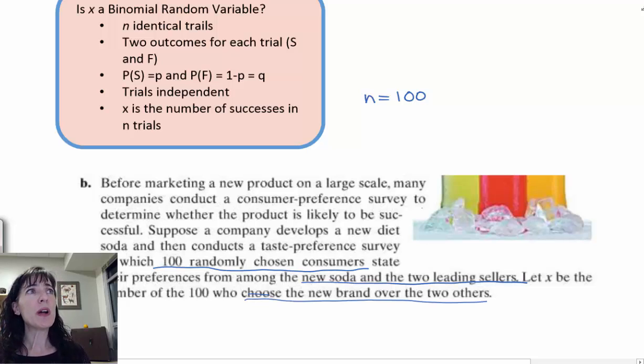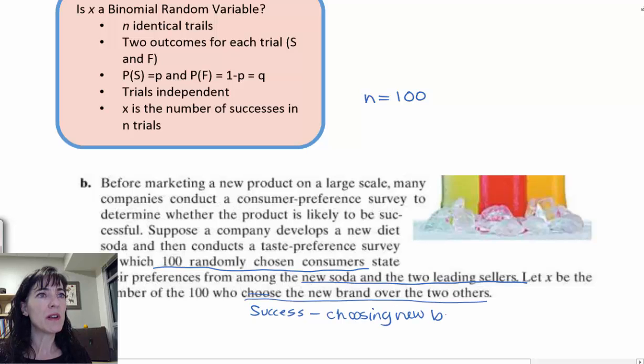And then two outcomes for each trial—success or failure. They did define down here. So the success is going to be choosing the new soda, and failure for them is choosing other brands.